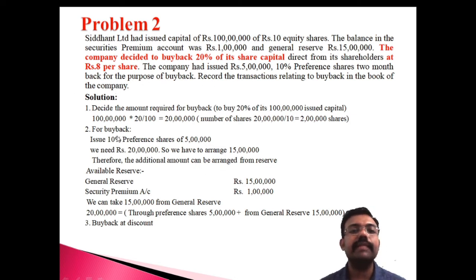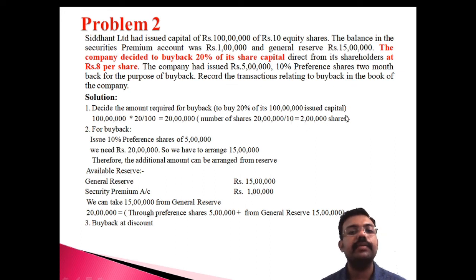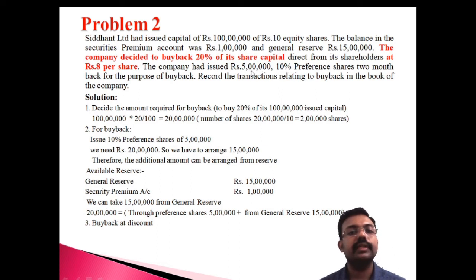Solution: calculate the amount required for the buyback. Total capital is 1 crore; 20% of 1 crore is 20 lakh. Number of shares = 20 lakh divided by face value 10 = 2 lakh shares. For the purpose of buyback, 5 lakh preference shares worth 5 lakh are issued at 10% preference share capital.